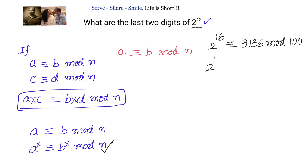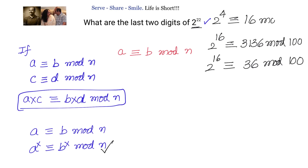Again, we simplify: 2 power 16 and 36 are congruent modulo 100, since 3136 minus 36 is divisible by 100. Earlier we wrote 2 power 4 and 16 are congruent modulo 100. Now we multiply these two congruences together, giving us: 2 power 20 and 36 times 16 are congruent modulo 100.